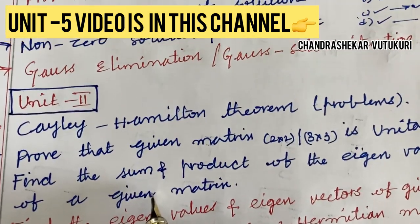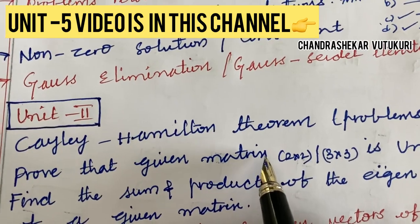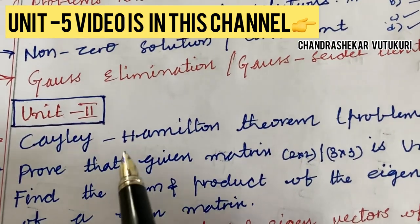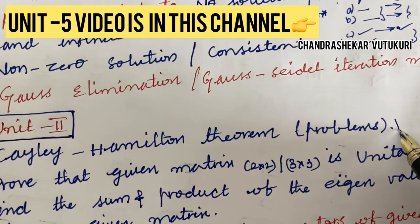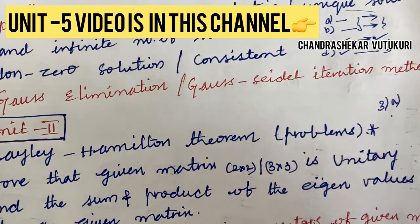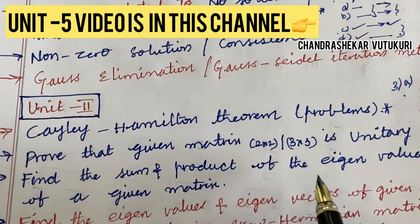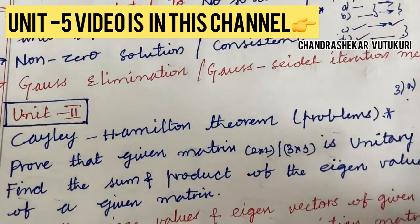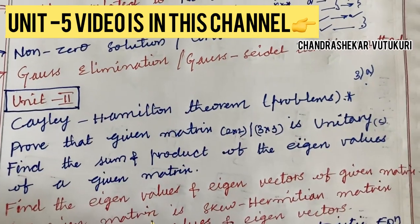For Unit 2, I will give you both short and long questions. The Cayley-Hamilton theorem and problems related to it may be the 3A question in the question paper. Proving that a given matrix of size 2×2 or 3×3 is unitary may be a short question — that could be a C-type question.